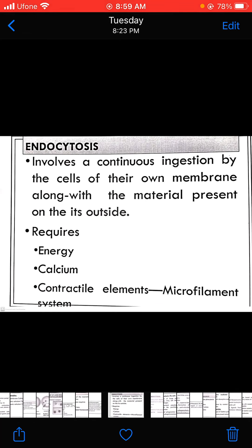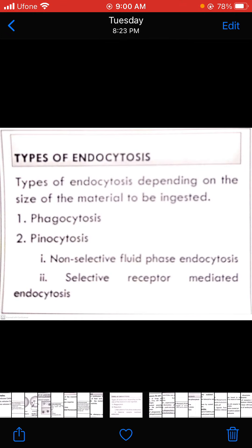Endocytosis involves a continuous ingestion by the cells of their own membrane along with the material present on the outside. So the material present on the outside of the cell membrane can be internalized by the process of endocytosis. Just like exocytosis, endocytosis requires energy, calcium ions, and molecules like the microfilament system.